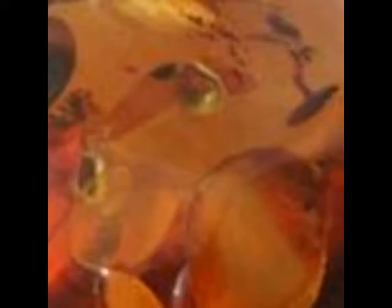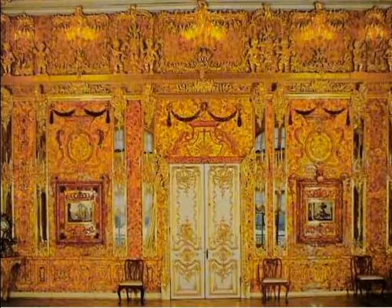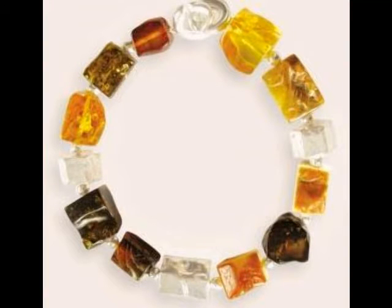that rubbing amber with fur or wool causes an attraction between them and that amber attracted small objects. Amber is a fossil tree resin that is found buried mostly along the shores of the Baltic Sea in the sand. It is about 40 million years old and is usually yellow, orange, or red, and in pure form it is used as a precious gem.